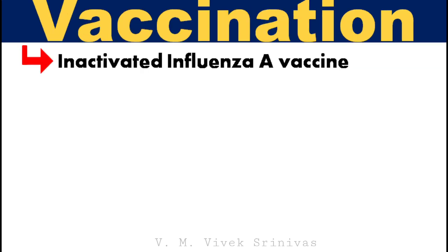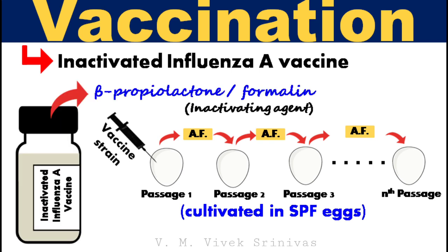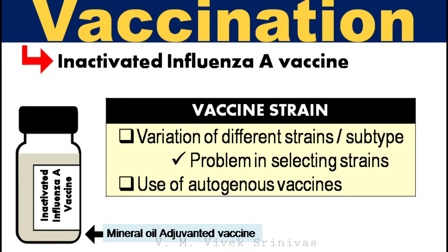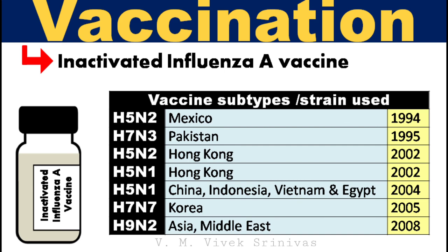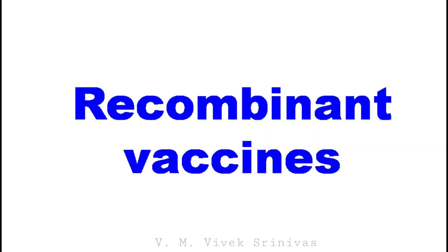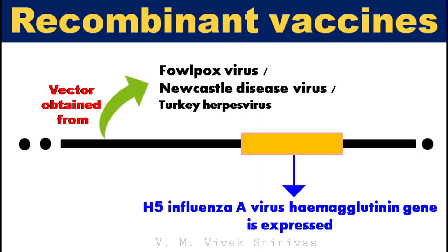Vaccination using inactivated influenza vaccine: these vaccines are cultivated in specific pathogen-free embryonated eggs, and then the infected allantoic fluid is inactivated by beta-propiolactone or by formalin. This inactivated vaccine is emulsified with mineral oil. Due to variation of different strains within a subtype, there is a problem in selecting strains to produce inactivated vaccines. Some vaccination strategies include use of autogenous strains — that is, vaccines prepared from isolates specifically involved in an epizootic. There are also live recombinant vaccines available for avian influenza, used in a few countries since 1997, mostly in chickens, in which foulpox virus, Newcastle disease virus, or turkey herpesvirus genome is ligated with the influenza A virus hemagglutinin 5 subtype gene and expressed.